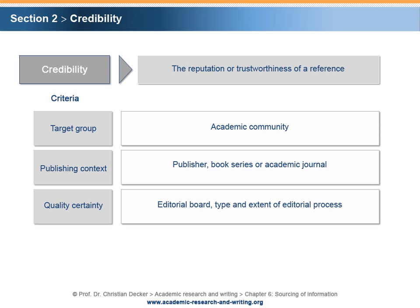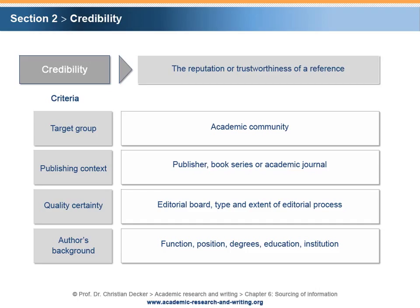Quality Certainty: The existence and composition of an editorial board, as well as the type and extent of an editorial process, may assist with determining the quality of a reference. In particular, the existence of a peer review process signals credibility. Author's Background: The function, position, education, degrees, and institutional background of the author of a publication may act as indicators for the academic credibility of the reference.